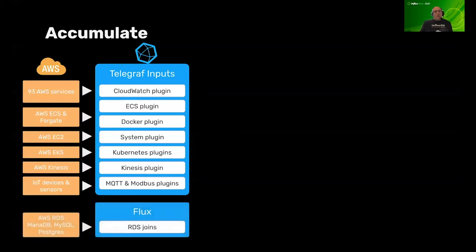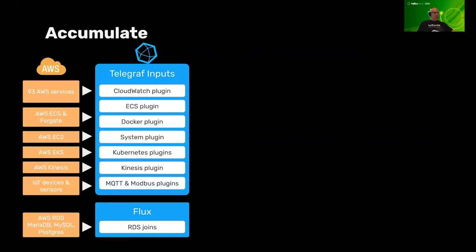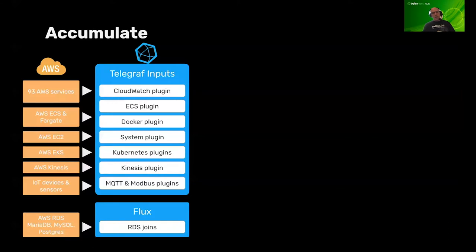We also allow you to pull in metrics from EC2 using our system plugin, AWS EKS or Elastic Kubernetes Service through our Kubernetes plugins, metrics from Kinesis using our Kinesis plugin, and if you have IoT devices or sensors, you can pull those in using our MQTT or Modbus plugins, to name but a few. Also, when pulling in time series data, you often want to enrich it with information from a relational database — for example, you might have a customer ID in the time series but need the customer name, location, or annual contract value stored in a relational database.